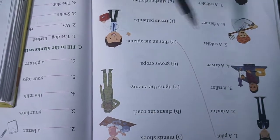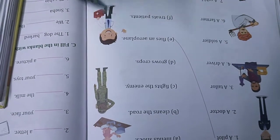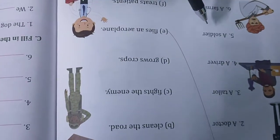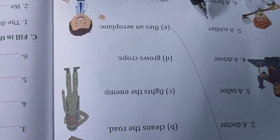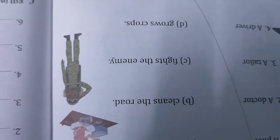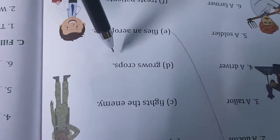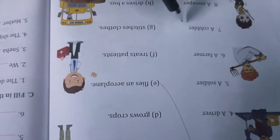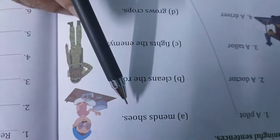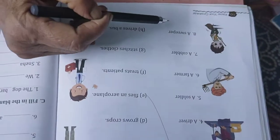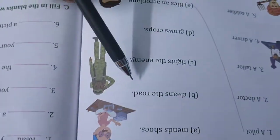Then 4H, a driver drives a bus. 5C, a soldier fights the enemy, a farmer grows crops. A cobbler mends shoes, a sweeper cleans the road.